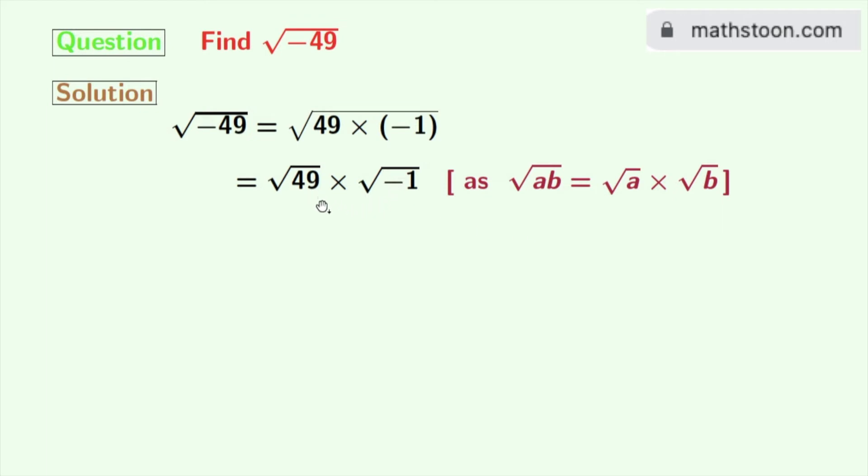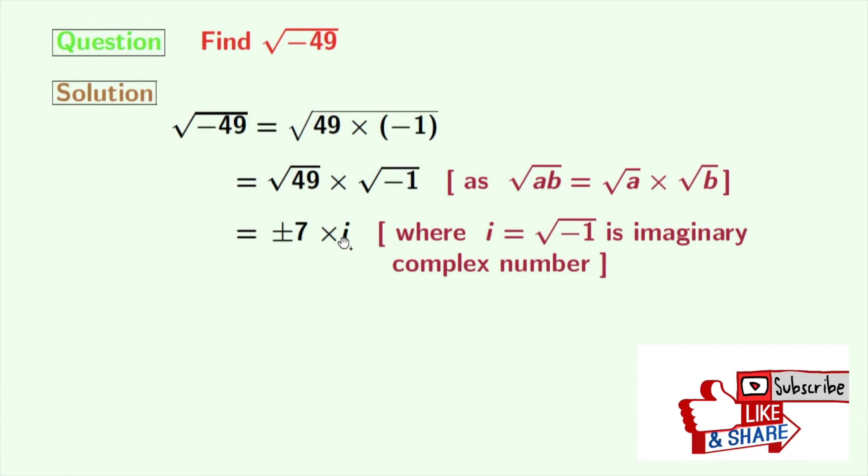Now we all know that square root of 49 is plus minus 7, and square root of minus 1 is i, where i is an imaginary complex number and its value is root over minus 1.